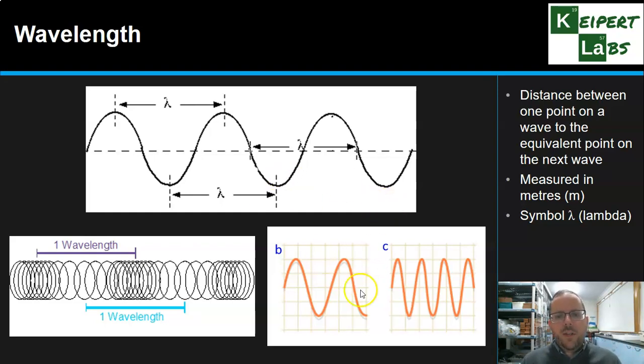We can see that in the image at the bottom here, that we have two different wavelengths. That is, we've got two waves that have a different gap between one wave and the next. V has a longer wavelength than C, because the gap is larger between the waves.